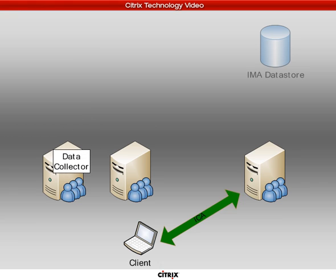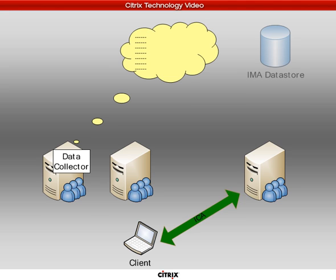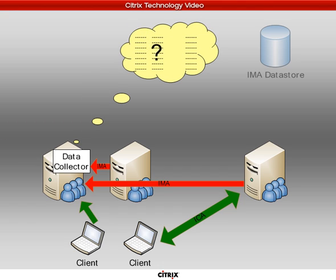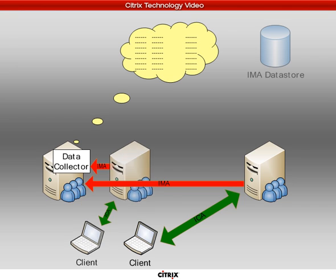Server 1 will build up its own memory to learn the status of all the other servers in the environment via the IMA protocol, giving the new data collector a good picture of what's going on within the farm. Additional clients that want to connect will have their request go to the new data collector, which selects what server is most appropriate — in this case, server 2. The data collector sends the address of server 2 down to the client, and the client establishes an ICA connection with the appropriate server.